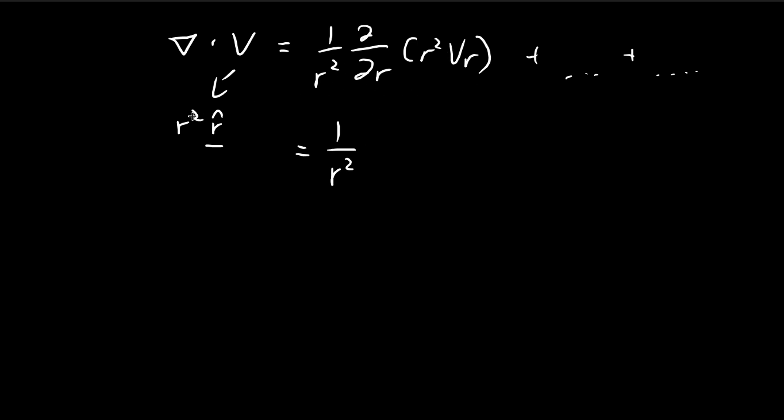So vr is the function here that is in the radial direction. So we just substitute r squared here, so we get r to the power of 4. So 4r to the power of 3 divided by r squared, so we get 4r.